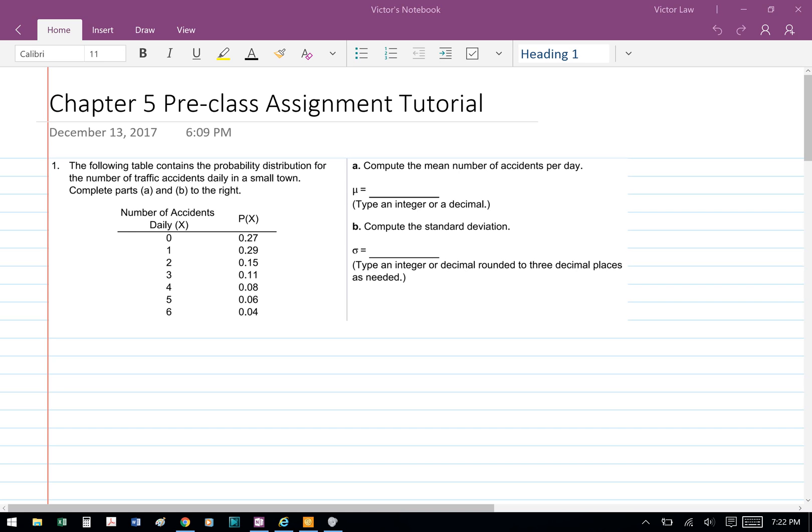The following table contains the probability distribution for the number of traffic accidents daily in a small town. Complete part A and B to the right.